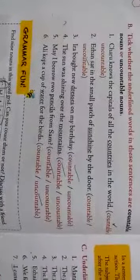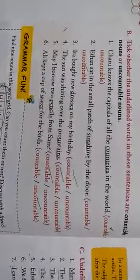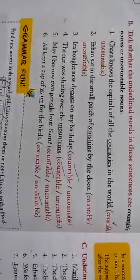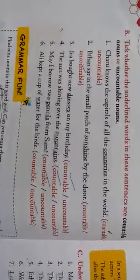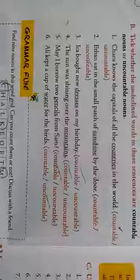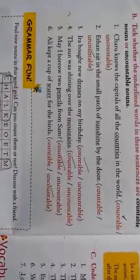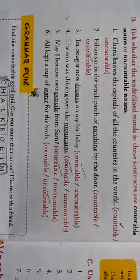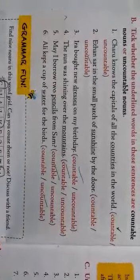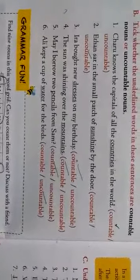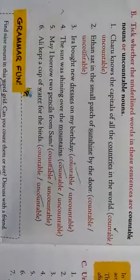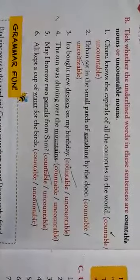We have to tick the words according to the underlined words, either those are countable nouns or uncountable nouns. Countable nouns are the nouns which we can count, for example, like number of pens a student has or the number of students in a class. Liquid things like oil, water, juices, such things are called uncountable nouns. So let us do this.